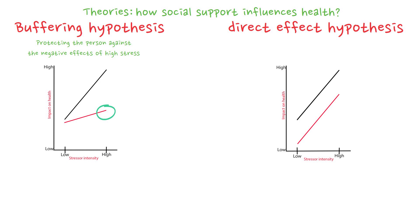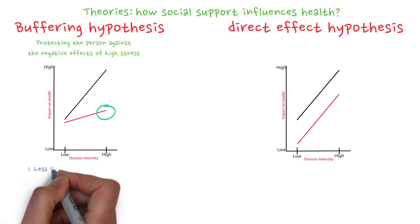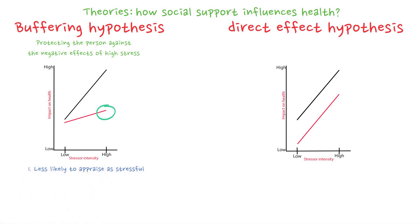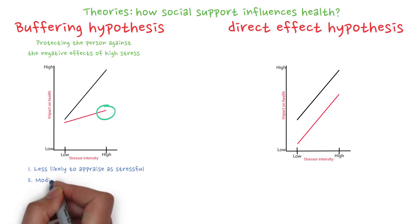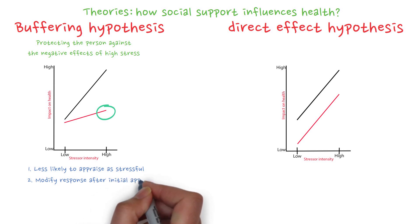Now let's look at how these theories work. The buffering hypothesis works in two ways. First, when people encounter a strong stressor, those who have high levels of social support may be less likely to appraise the situation as stressful than those with low levels of support. Second, social support may modify people's response to a stressor after the initial appraisal.